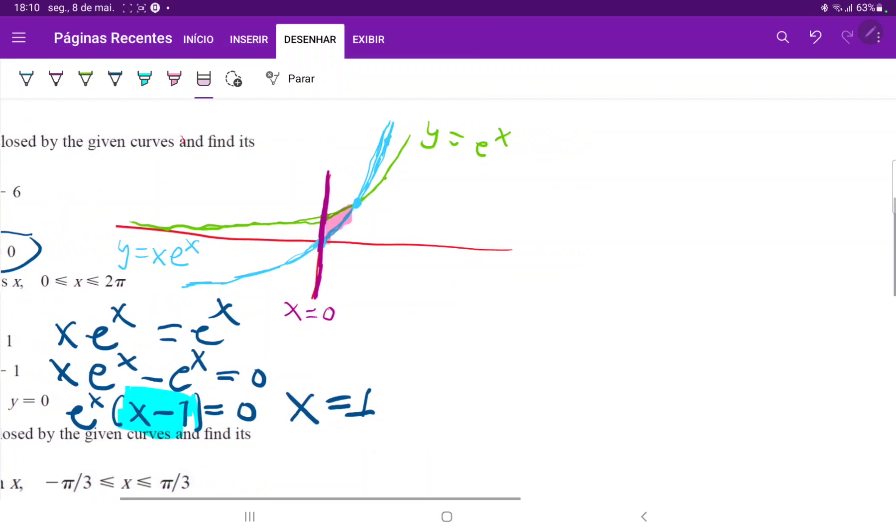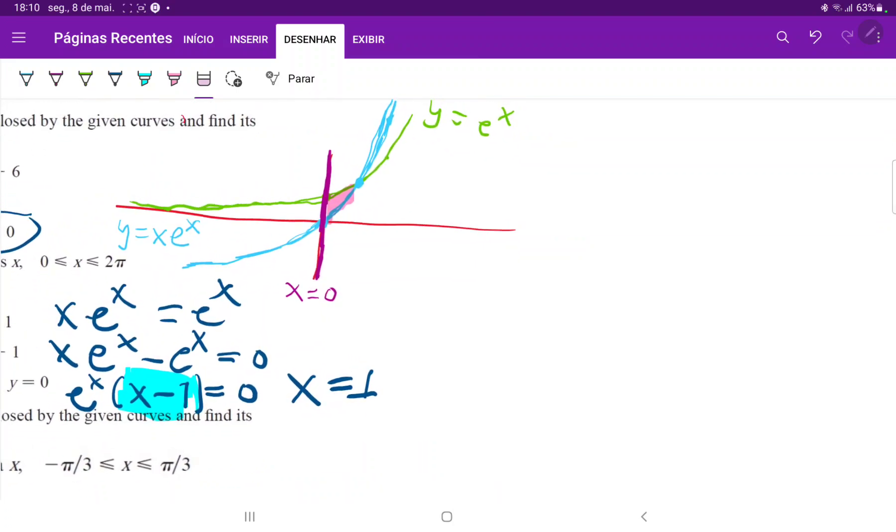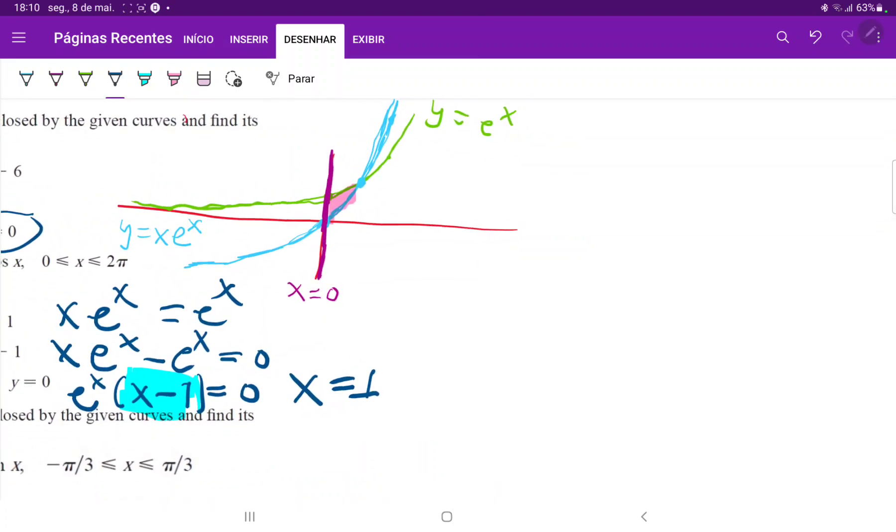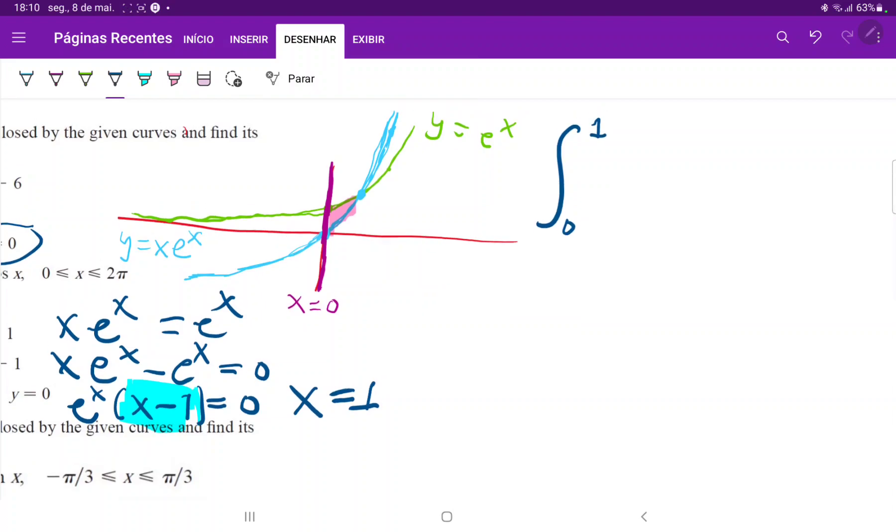So once we have found this, we can set our integral up and then just proceed with it. So this is the integral from 0 to 1 of what is the upper function? The upper function is the one that is in green. This is e to the x, then minus the blue function, minus x times e to the x, and all of this times dx.